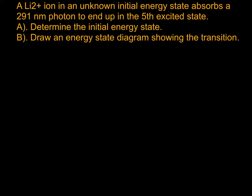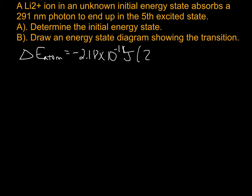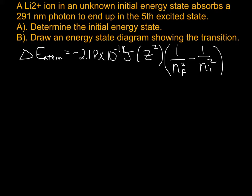The first thing we want to do is remind ourselves of a few equations. The modified Bohr equation: ΔE_atom equals negative 2.18 times 10 to the negative 18 joules, multiplied by Z squared — that takes into account that it's not hydrogen; if it were hydrogen, Z would just be 1 — times (1 over n_final squared minus 1 over n_initial squared). Another reminder is that E_photon equals hc over lambda, and we're going to use that wavelength to calculate the energy.